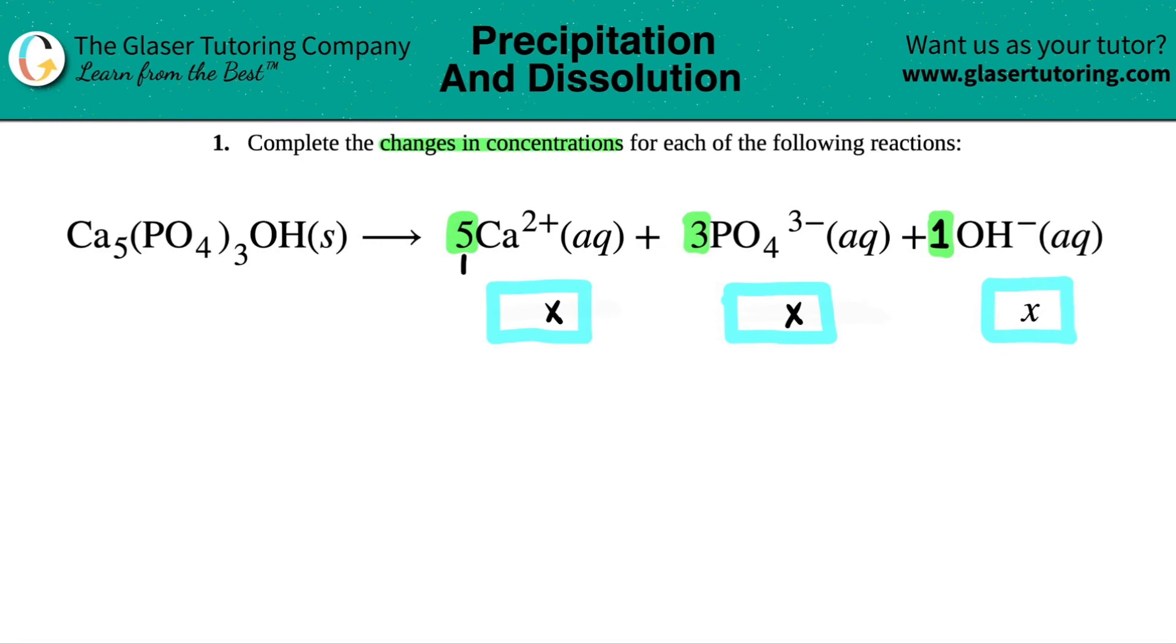But now this would change by five times X, or five X, and the PO4 would change by three X. So it's just as simple as just looking at your coefficients and writing down that change.